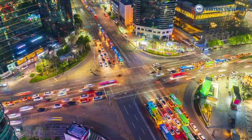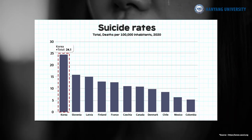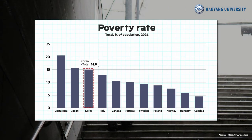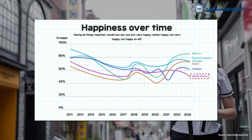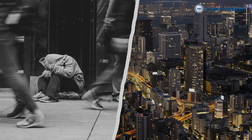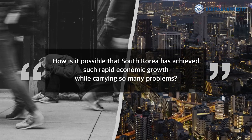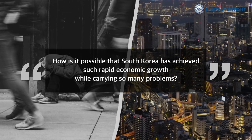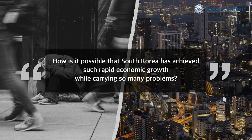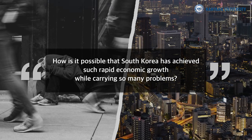Currently, South Korea records the highest suicide rate, elderly poverty rate, and the proportion of unhappy children and youths among OECD member countries, indicating a serious situation of social conflict as well. So, how is it possible that South Korea has achieved such rapid economic growth while carrying so many problems?